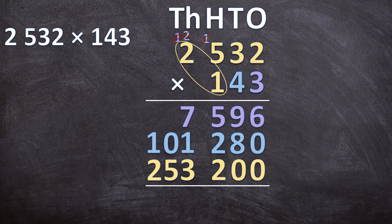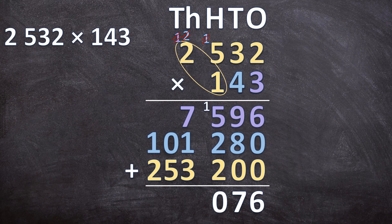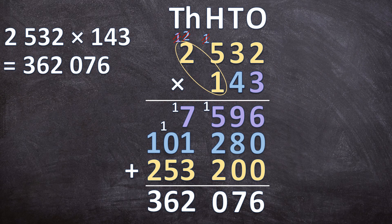We now have the answers for 3, 40, and 100 times 2532. Adding them together starting at the ones: 6 + 0 + 0 = 6. 9 + 8 = 17 — write down 7, carry 1. 5 + 2 + 2 = 9, plus the carried 1 is 10 — write down 0, carry 1. 7 + 1 + 1 + 3 = 12, plus the carried 1 is 13 — write down 3, carry 1. Wait: 0 + 5 = 5, plus the carried 1 is 6. Then 1 + 2 = 3. So 2532 times 143 equals 362,076.